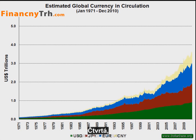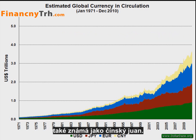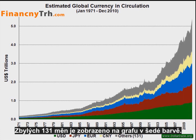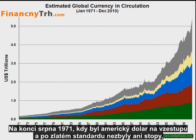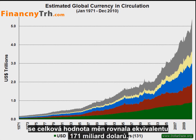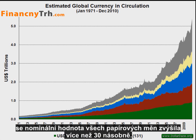The fourth most significant paper currency is the Chinese renminbi, also known as the Chinese yuan. The remaining 131 currencies shown in this chart are represented in gray. Together, these 135 currencies amount to 5.2 trillion U.S. dollars. At the end of August 1971, when the U.S. dollar was taken off the last vestiges of the gold standard, the total amount of currency was equivalent to 171 billion U.S. dollars. This means that over the last 40 years, the nominal valuation of all paper money has increased by more than 30 times.